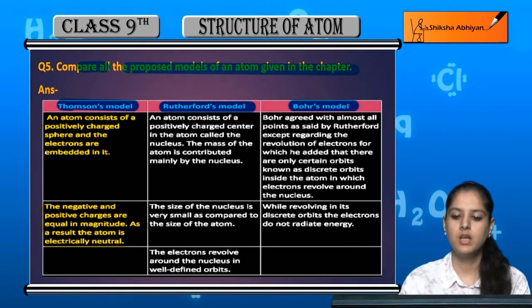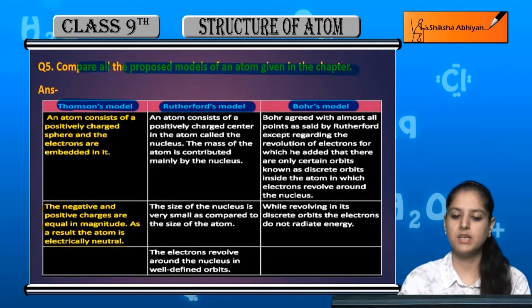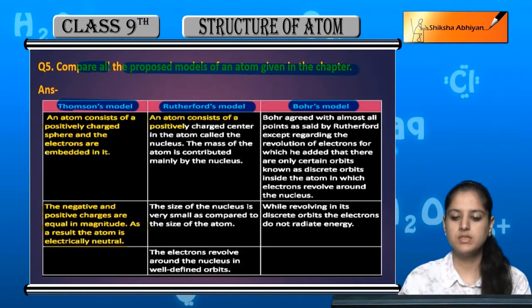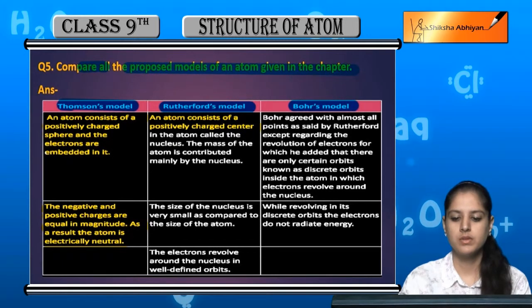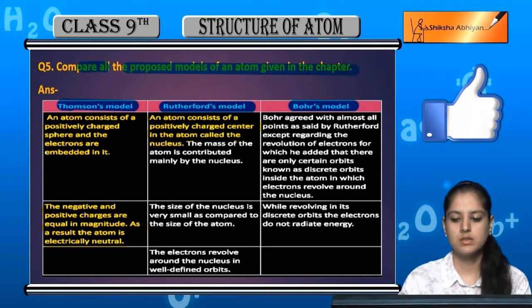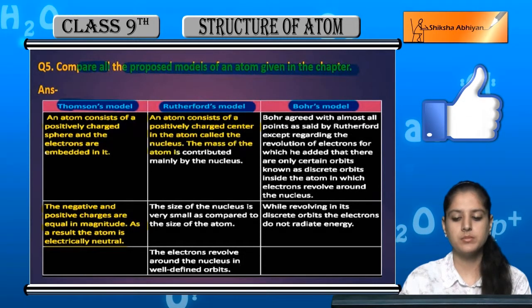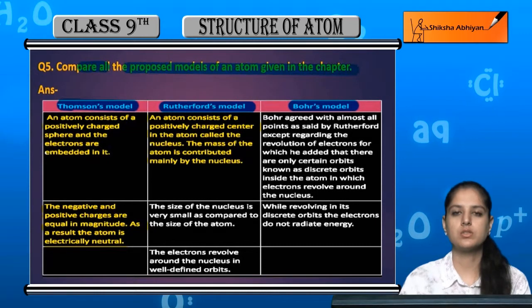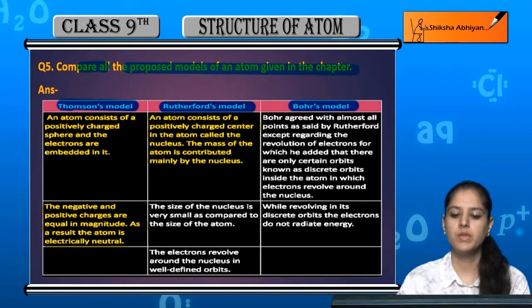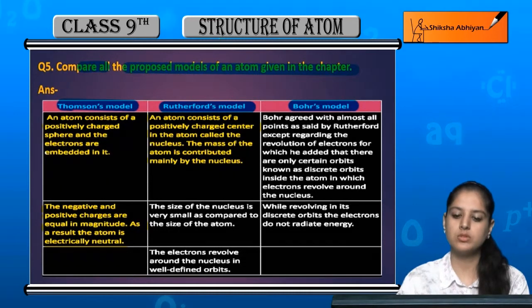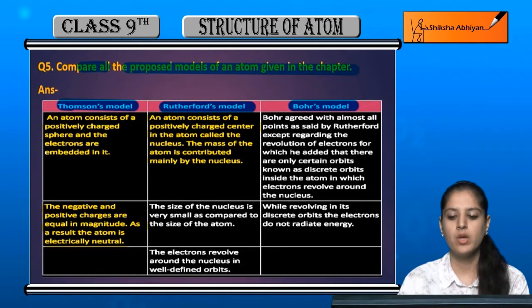Now Rutherford's model. An atom consists of a positively charged center called the nucleus. The mass of the atom is contributed mainly by the nucleus. So according to Rutherford's model, there is a positively charged center in the atom called the nucleus, and the atom's main mass is contributed by the nucleus.